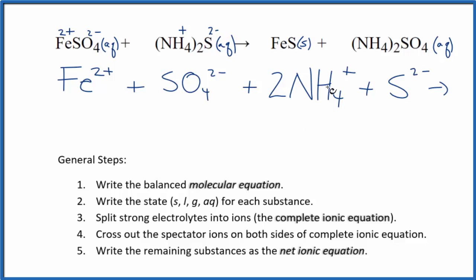For the products, we don't split solids apart in net ionic equations. We just leave FeS. And then for the ammonium sulfate, we have that positive and then 2 minus.